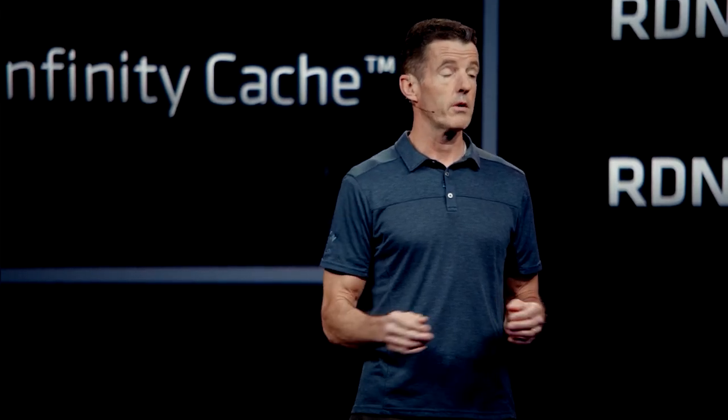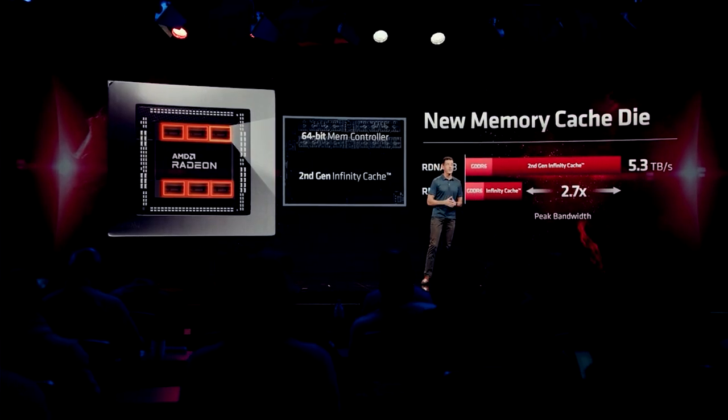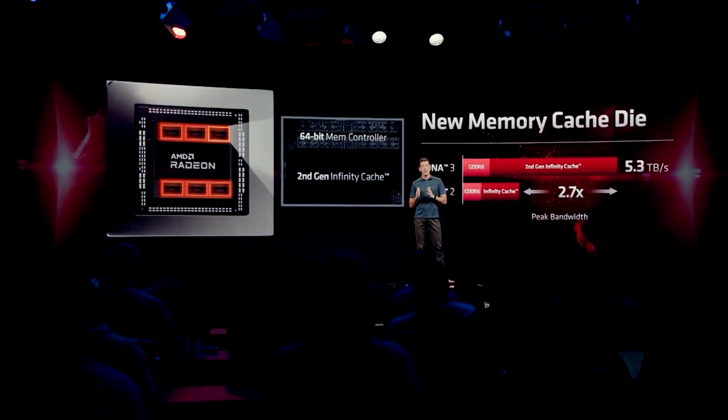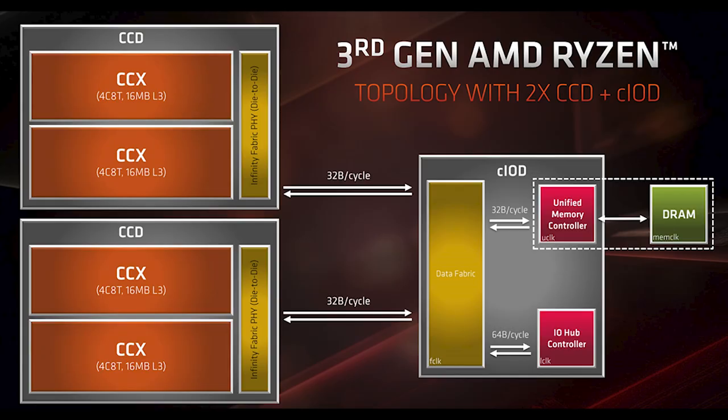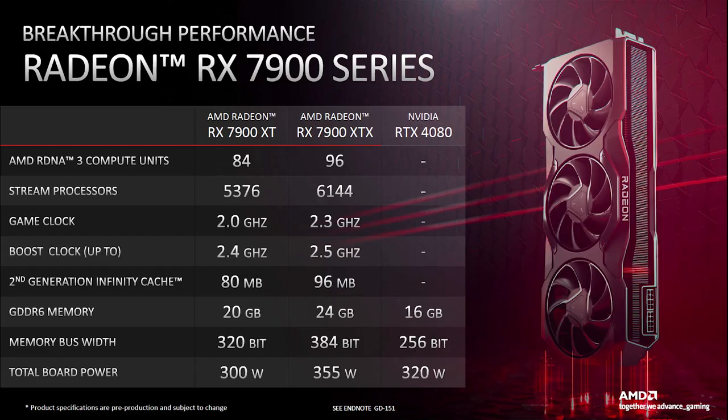Why 6nm? Some stuff just doesn't shrink down as well using smaller nodes, and AMD have already employed this strategy before — back on Zen 2 they used TSMC's 7nm process, while the IOD was built using 12 or 14nm by GlobalFoundries, depending on the application. The GCD houses the stream processors, ALUs, ROPs, TMUs, AI, display engines, and more.